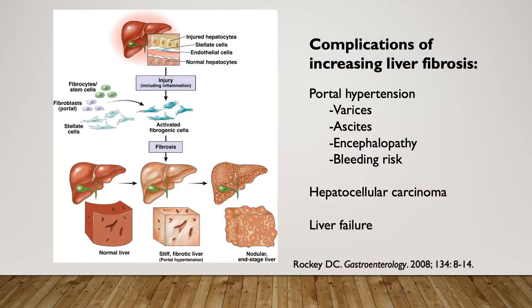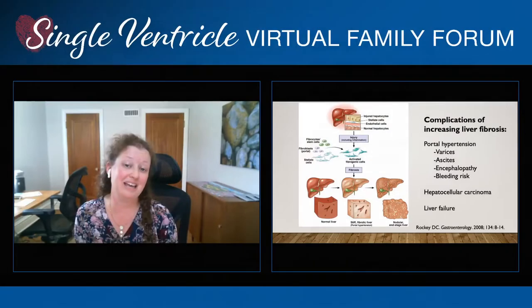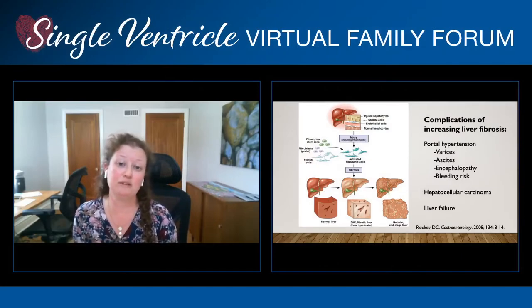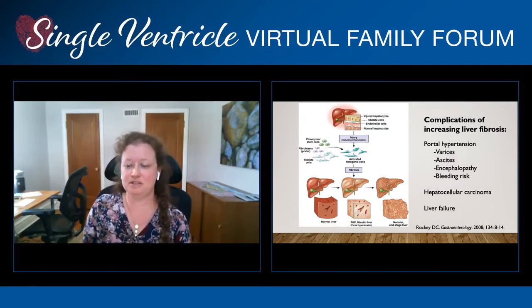This isn't a linear process where we know exactly how much scar tissue is forming year after year — it takes many years, and scar tissue forms differently for every patient. With the Fontan patient population, liver damage starts occurring very young, but you don't actually see the results until 10, 20, sometimes even 25 years after the Fontan procedure is complete.